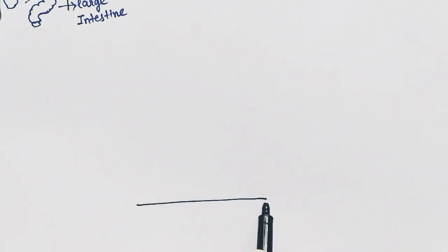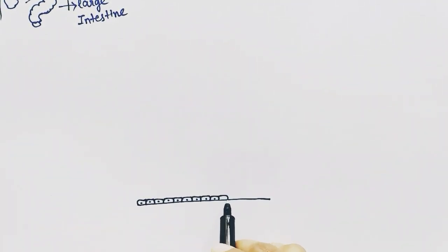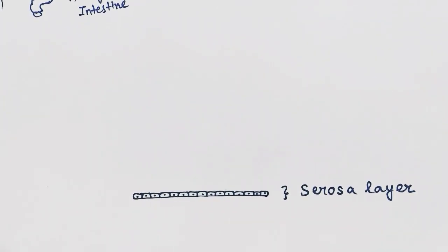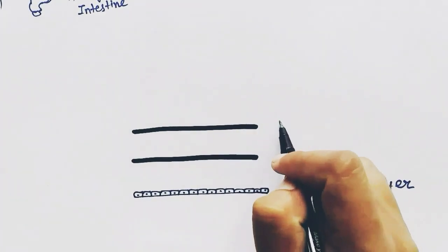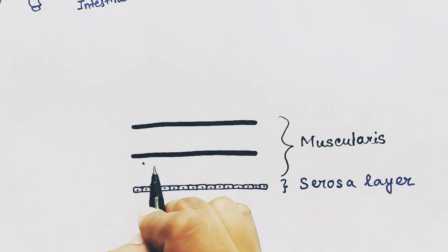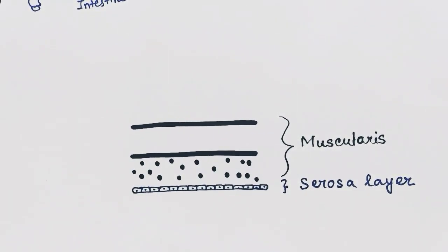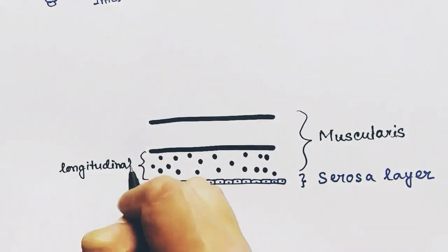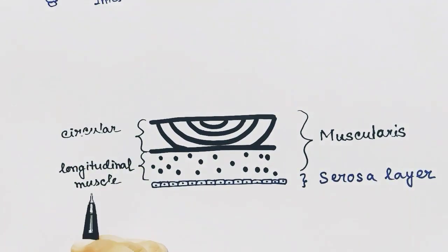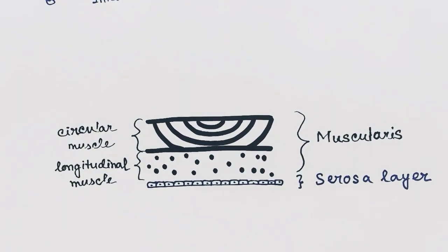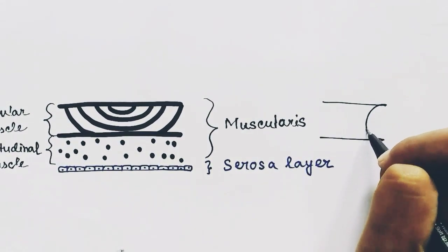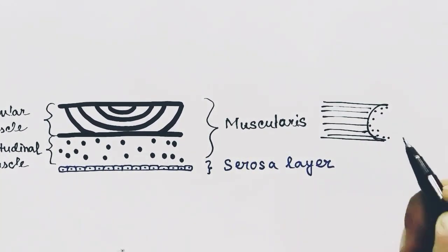Now we will cut the pipe and put it flat to understand the layers properly. The outermost is the single cell Serosa layer. After that comes the muscle layer — the muscularis propria — which has the longitudinal muscle and the circular muscle, both of which are smooth muscles. Let's look at the orientation of these two muscles in the small intestine.